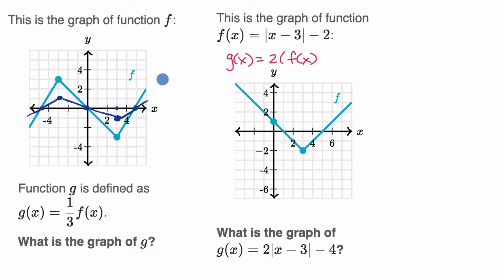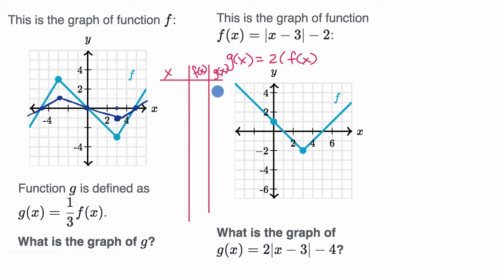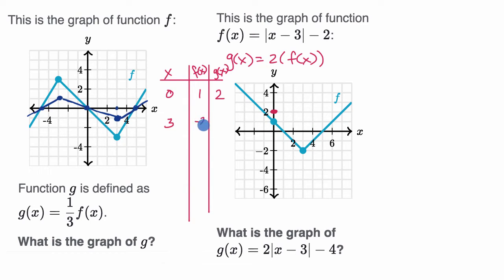We can set up a table: x, f(x), and g(x) = 2·f(x). When x = 0, f(0) = 1, so g(0) = 2. When x = 3, f(3) = -2, so g(3) = 2 × (-2) = -4. So g(3) is going to be right over there.